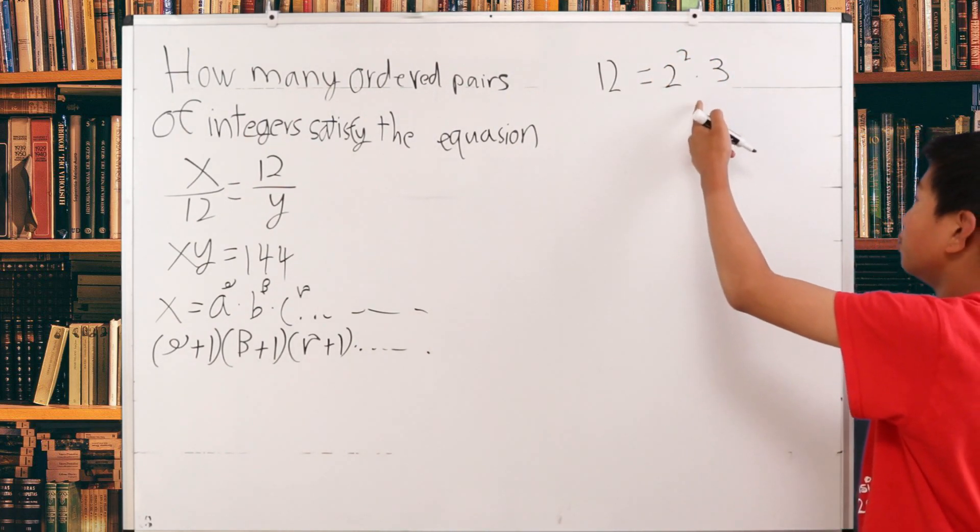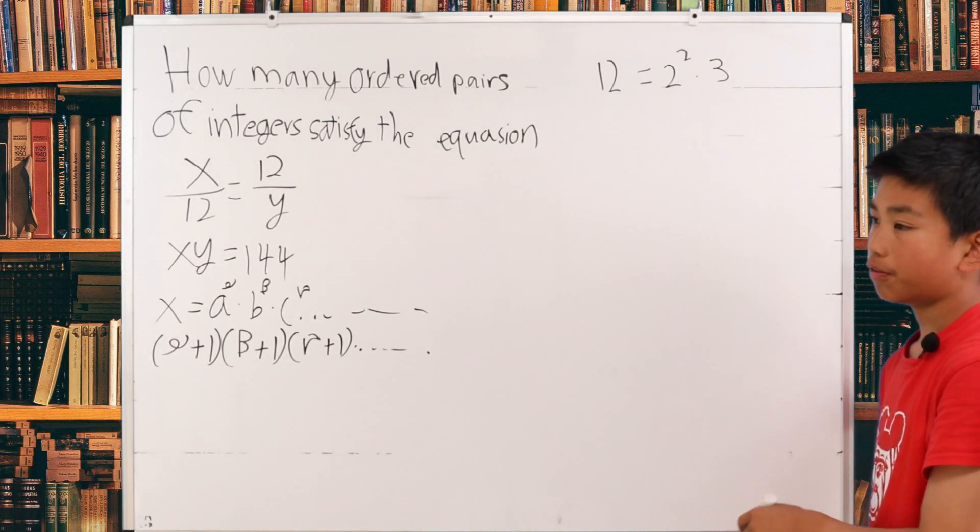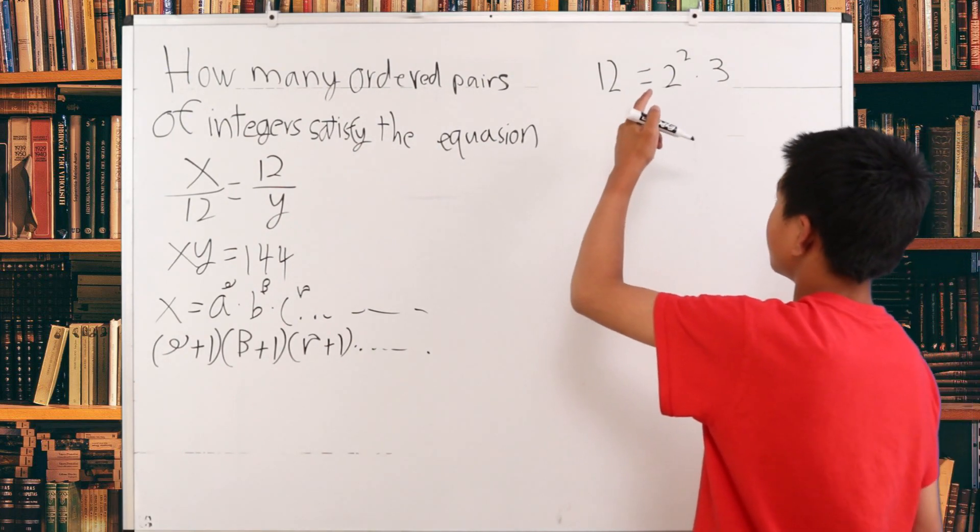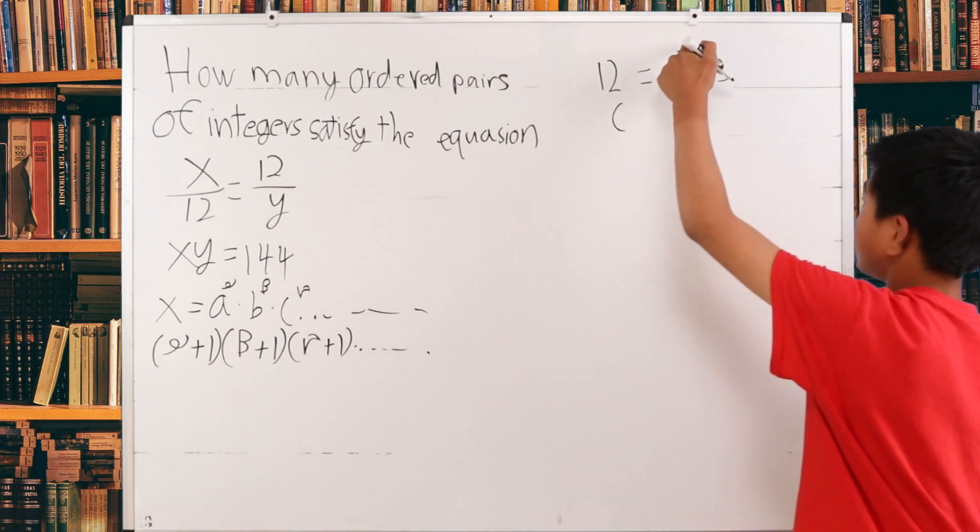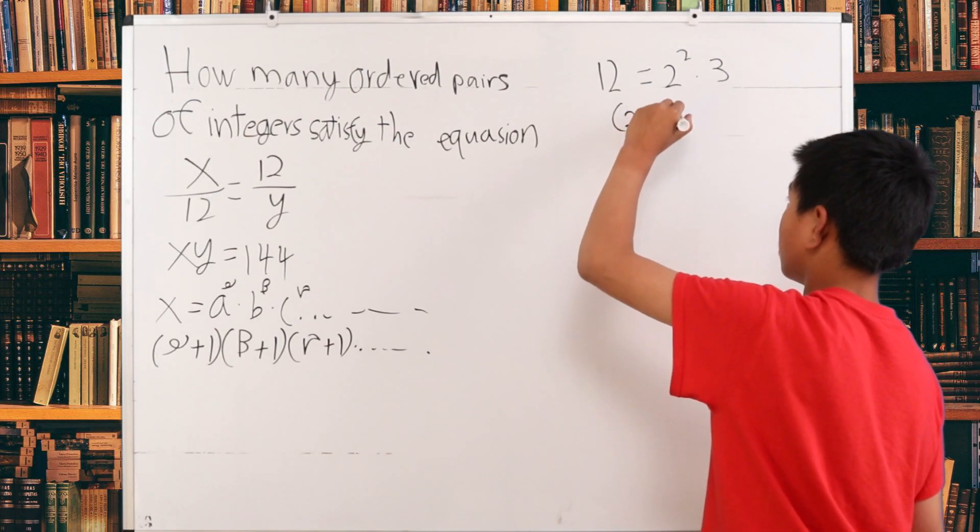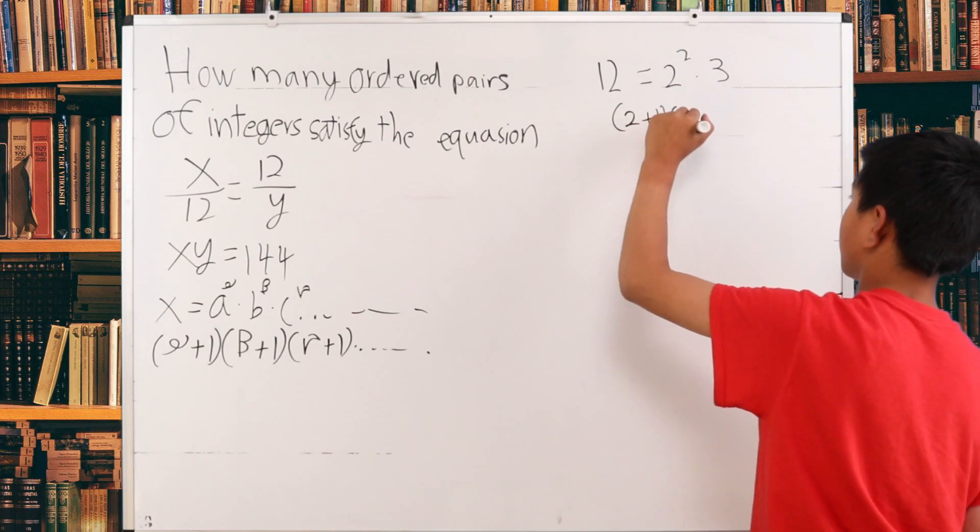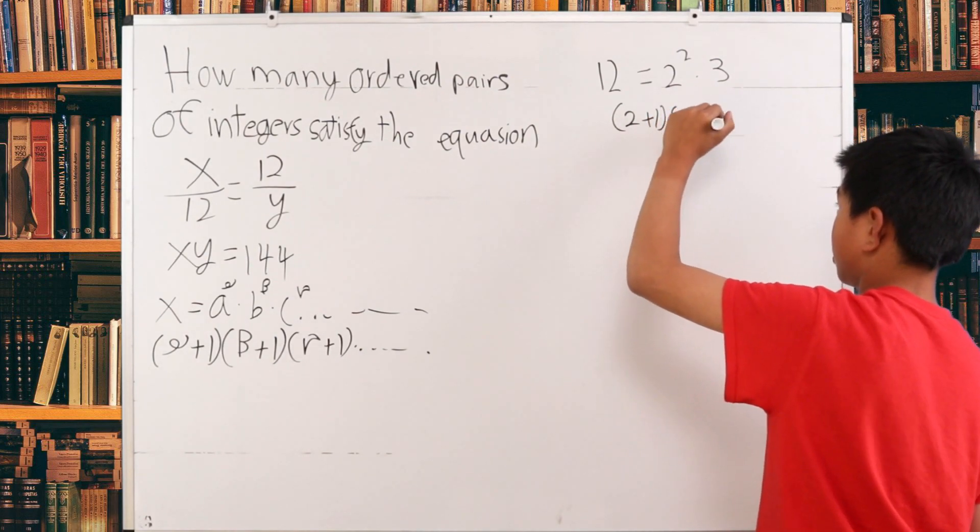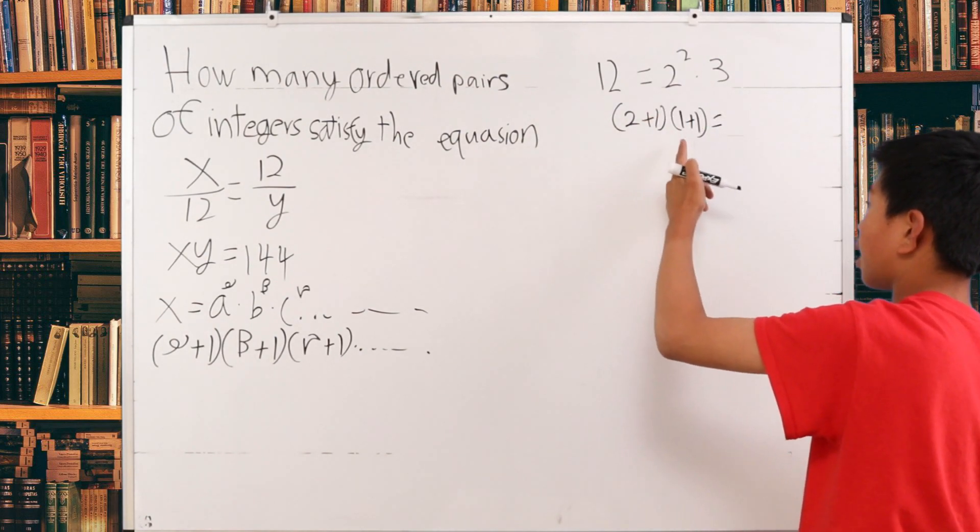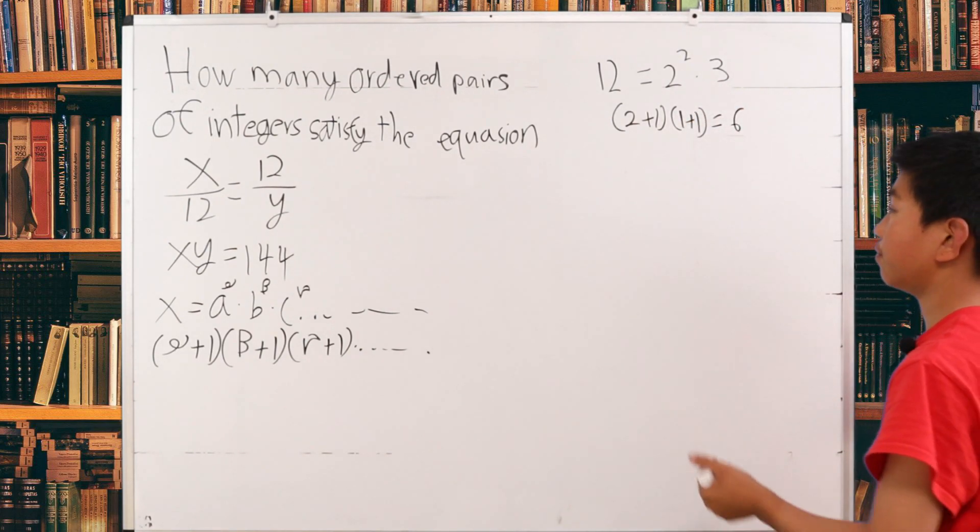So we want to find the number of combinations. Since this is the power 2, 2 plus 1 times, this is 3 to the power of 1. So 1 plus 1. This is 3 times 2 or 6. And we can just verify that.